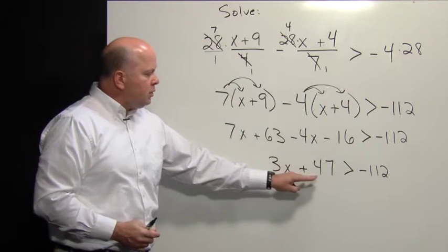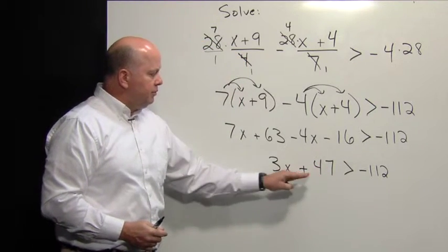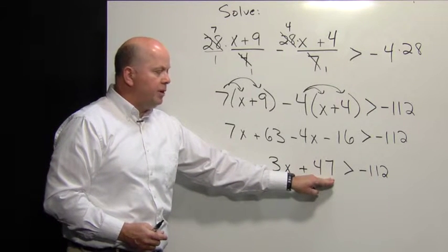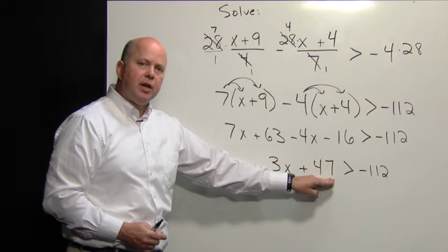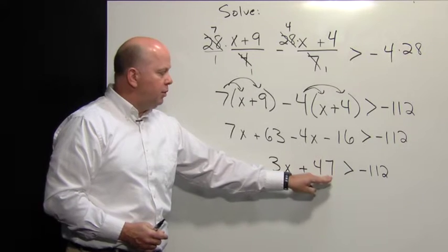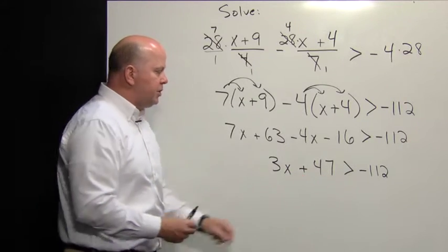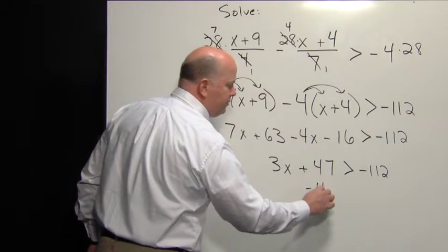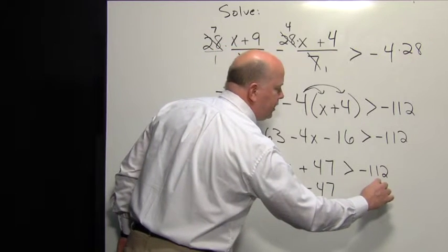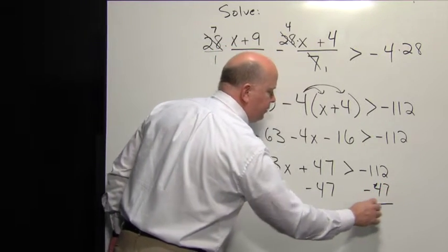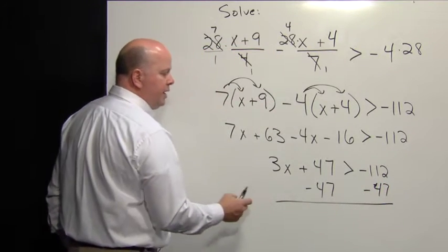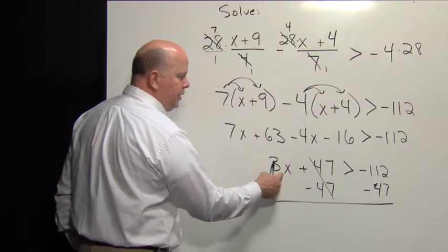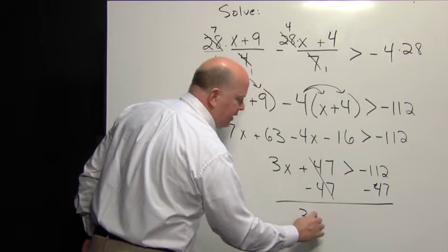So now we need to solve for the variable and get it by itself. We need to get rid of this 47 by doing the inverse operation of addition — subtract 47 from both sides. This represents zero, and zero plus 3x is simply 3x. So we have 3x is greater than negative 159.